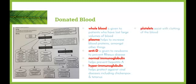Platelets are the tiny cell fragments within our blood which help to clot. So if a patient has a disease such as hemophilia, which stops their blood from being able to clot properly, they can be given an infusion of platelets — especially if trauma has occurred and there's excess bleeding. The platelets will help to clot the blood, stop the bleeding, and hopefully return the patient back to normal.